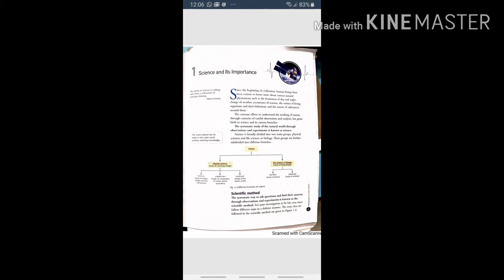Now children, see what is scientific method? It is the systematic way to ask questions and find their answers through observations and experiments, known as the scientific method. For your investigation to be fair, you must follow different steps in a definite manner.